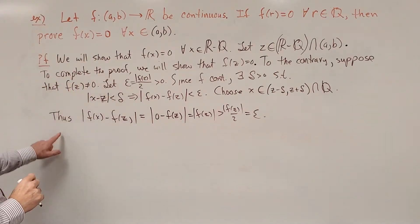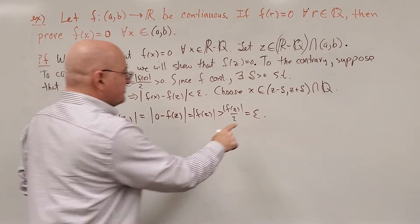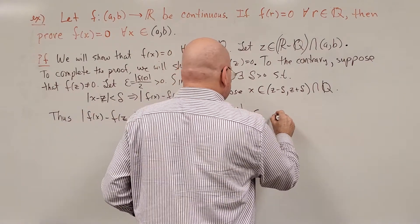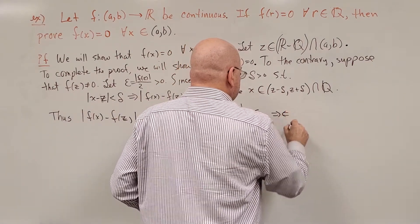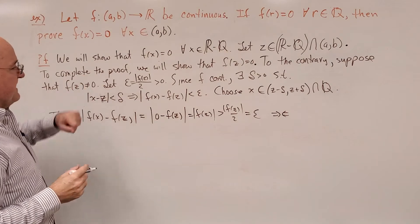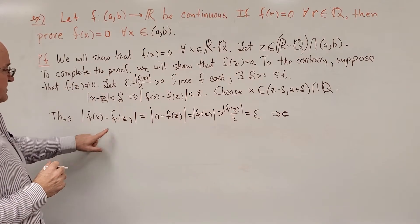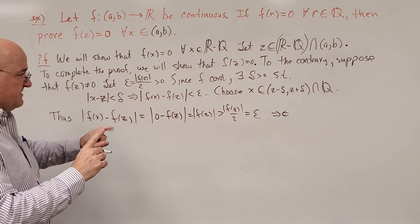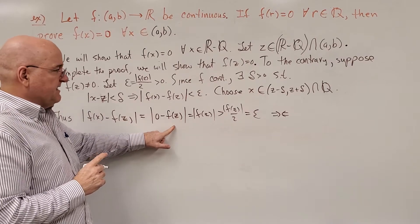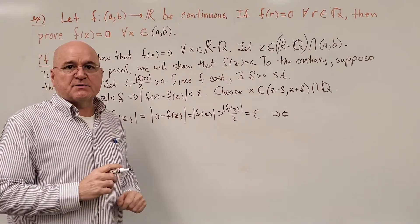So, hopefully that is clear that's our contradiction. And it's a contradiction because f is continuous, x was close to z yet |f(x) - f(z)| was not less than epsilon, it was greater than epsilon.